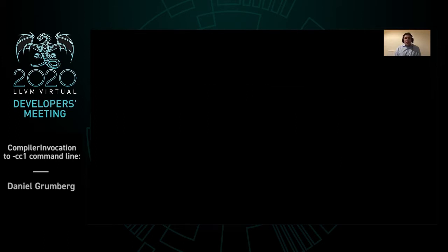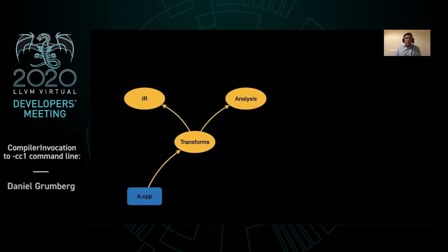Let's go through an example. ClangScanDeps starts scanning and discovers translation unit A, which depends on the transforms module, which in turn depends on IR and analysis. Next, we find B, which is compatible with A and also depends on transforms. Because they are compatible, we can reuse the same set of modules.